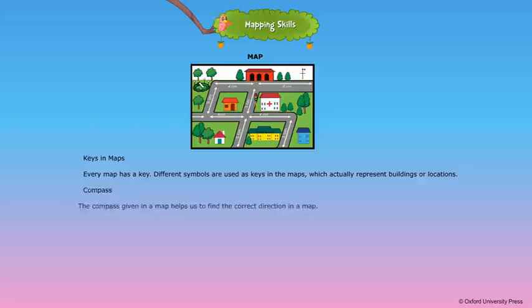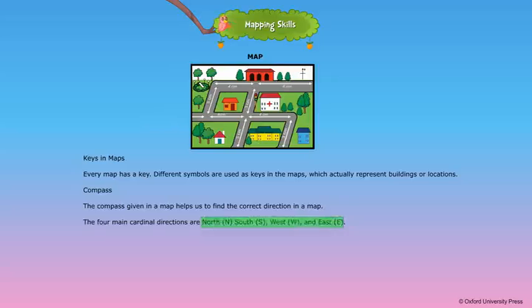Compass. The compass given in a map helps us to find the right direction in a map. The four main cardinal directions are North (N), South (S), West (W), and East (E).